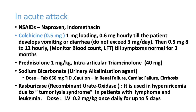Sodium bicarbonate is another drug used to alkalinize the urine — available as 650 mg tablets, given three times daily. Rasburicase is another drug, not very useful in routine gout, but is used when high uric acid is due to tumor lysis syndrome or hematological malignancies. The dose is IV 0.2 mg/kg once daily for up to five days.